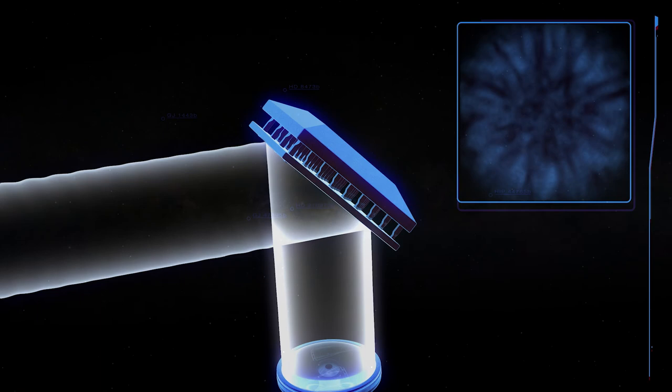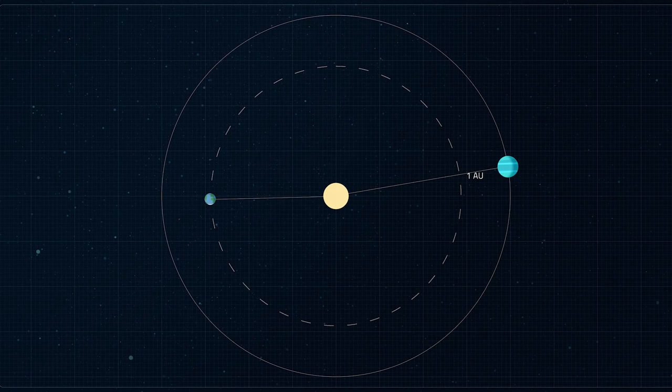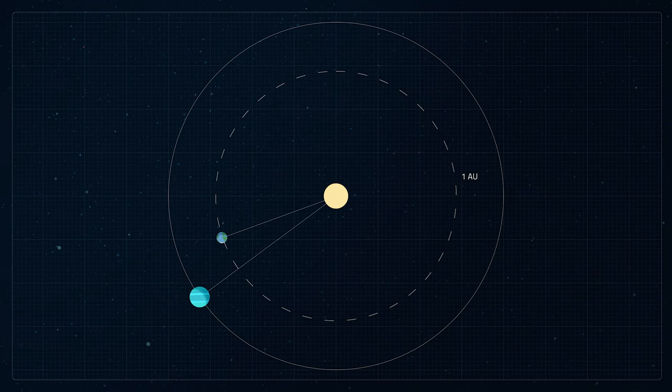To deepen its study of exoplanets, the Roman Space Telescope will house a beyond-state-of-the-art coronagraph that will directly image and analyze Neptune-sized planets in orbits slightly larger than Earth's, a dramatic improvement over current capabilities.